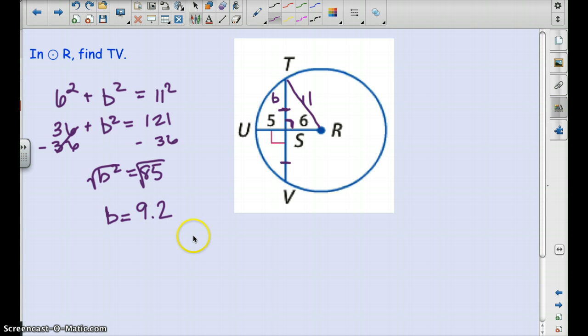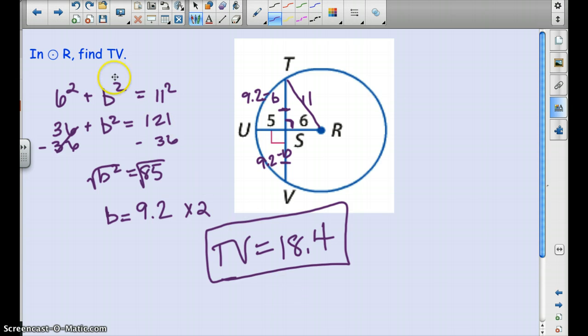So here is the work to be shown. And you should get B is 9.2. So if B is 9.2, so we know that these are congruent. So if we want to find TV, we're going to add these two together or take it times 2. And TV ends up being 18.4 around there. All right, let's move on.